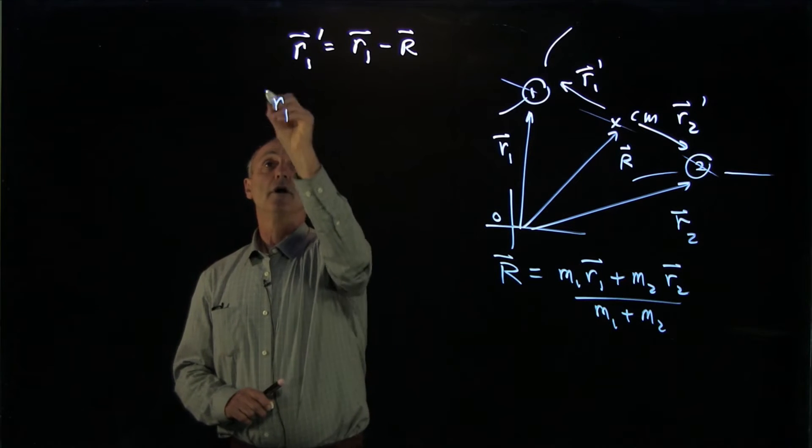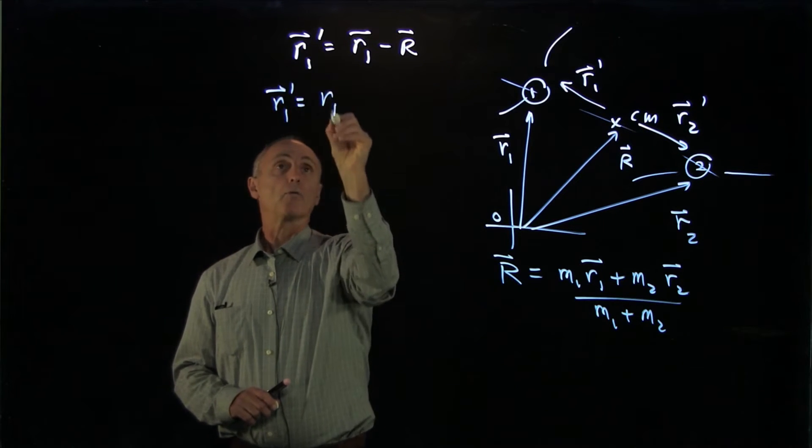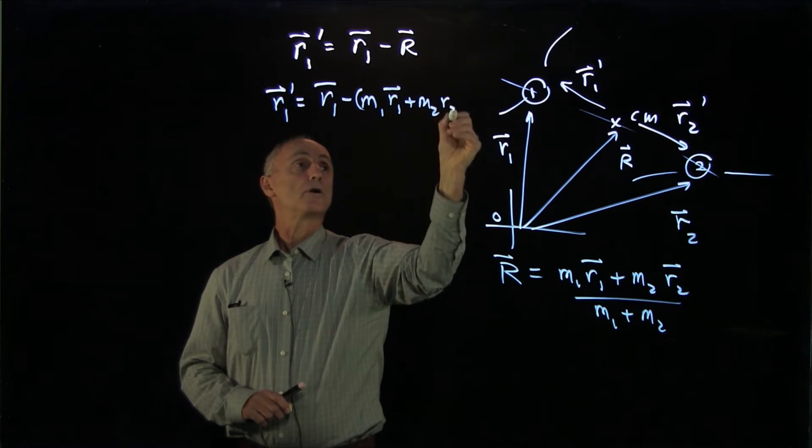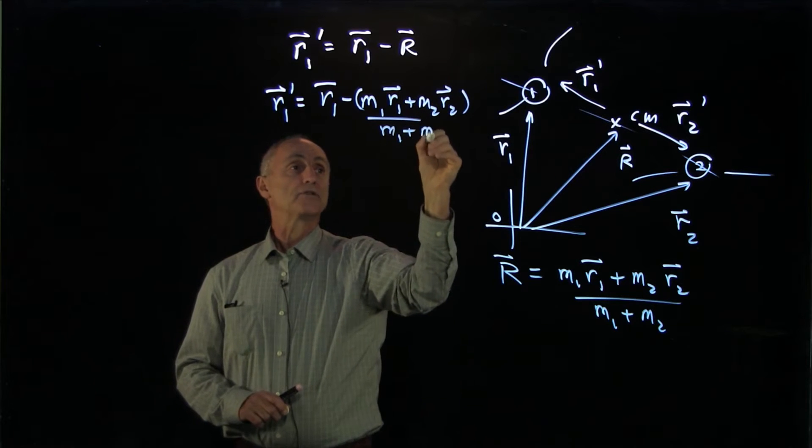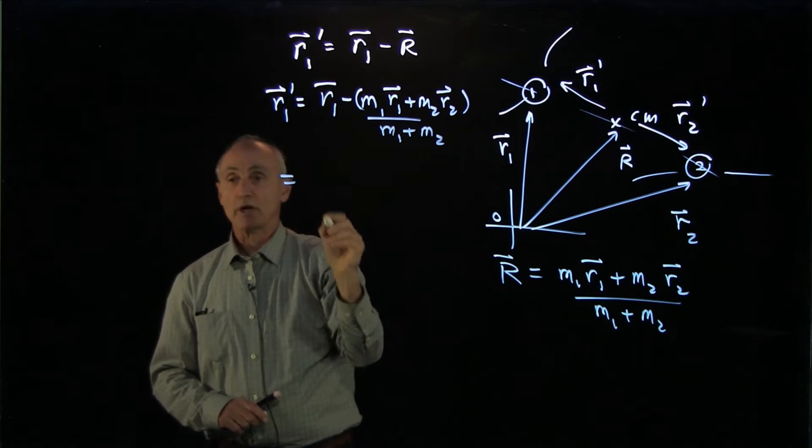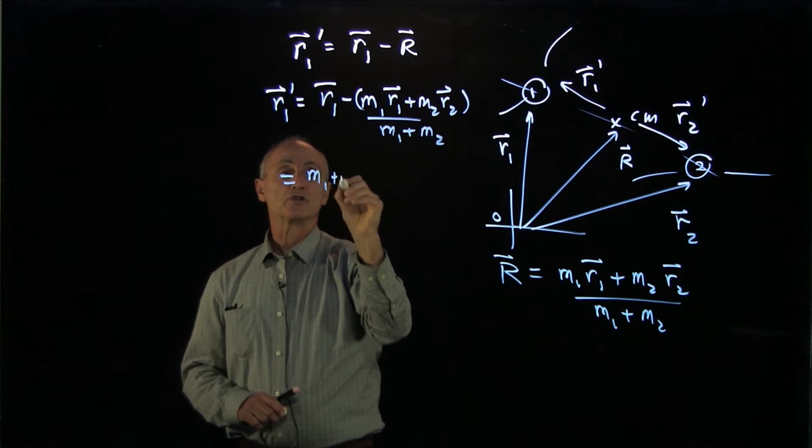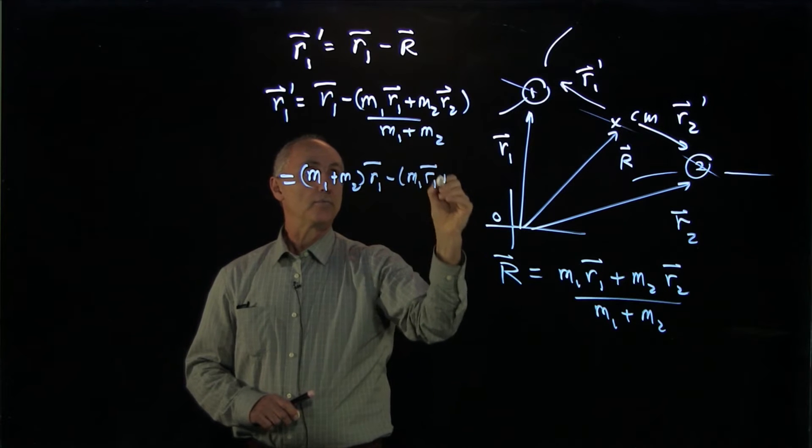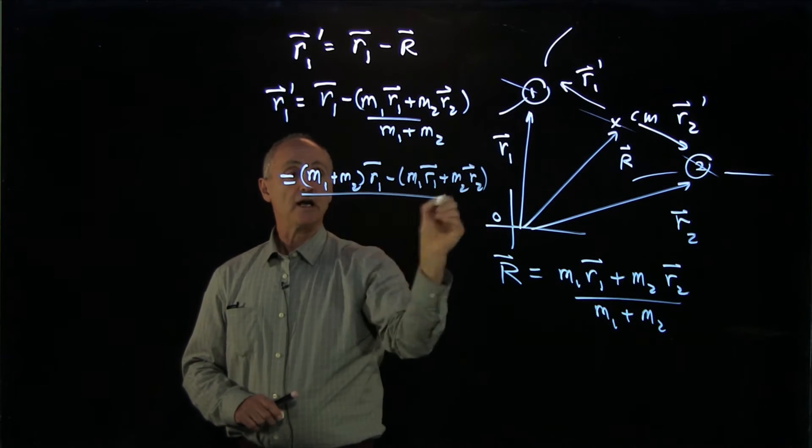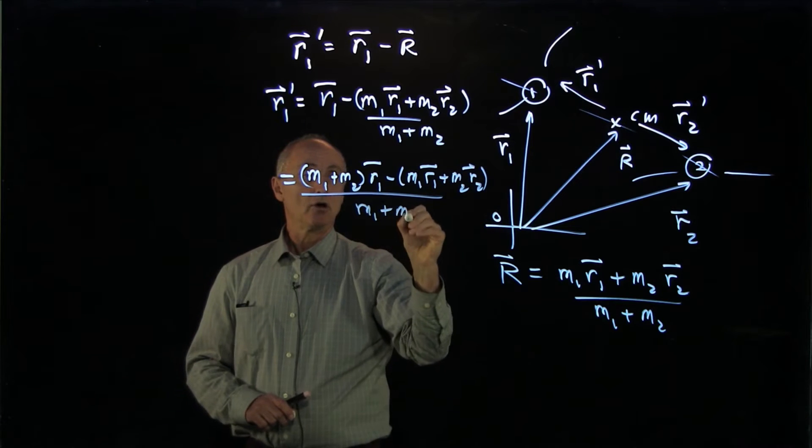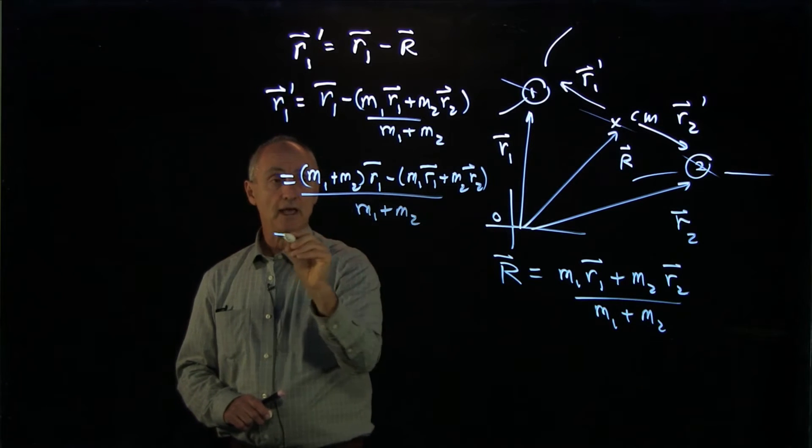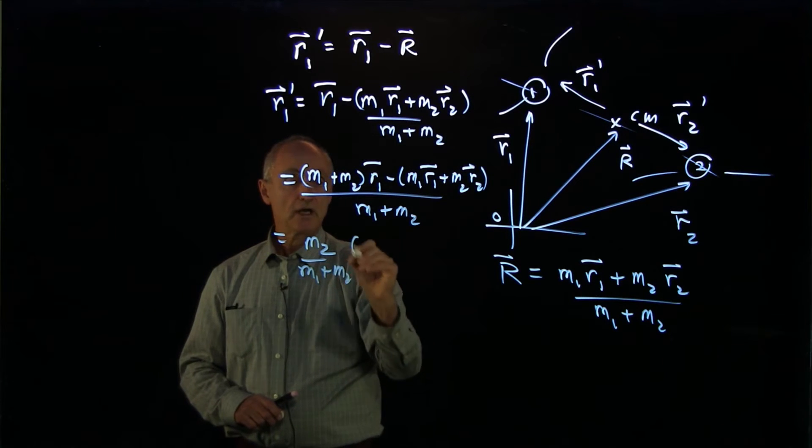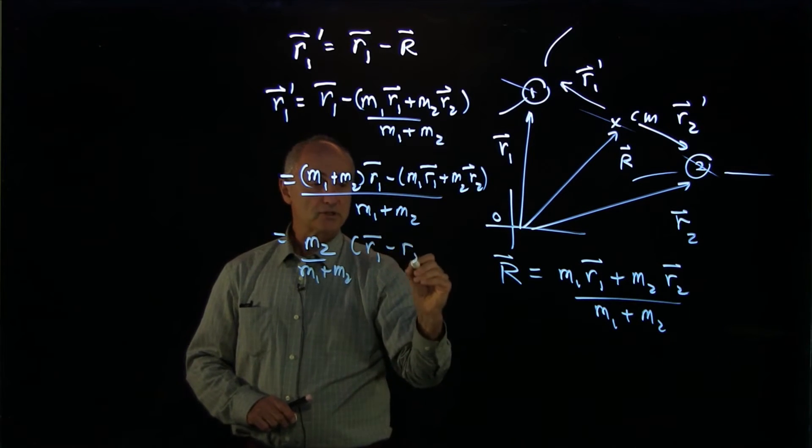We can use our result here that r1 prime is r1 minus m1 r1 plus m2 r2 divided by m1 plus m2. When we combine terms, r1 minus m1 r1 plus m2 r2 divided by the total mass, we now have the m1 r1 terms cancel, and we have a common m2 over m1 plus m2 times r1 minus r2.